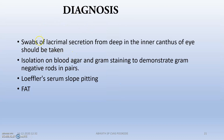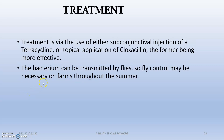For diagnosis, swabs of the lacrimal secretion can be taken, as well as from the inner canthus of the eye. For isolation, blood agar is used to see the diplococcus organisms. Fluorescent antibody testing and PCR can also be used.